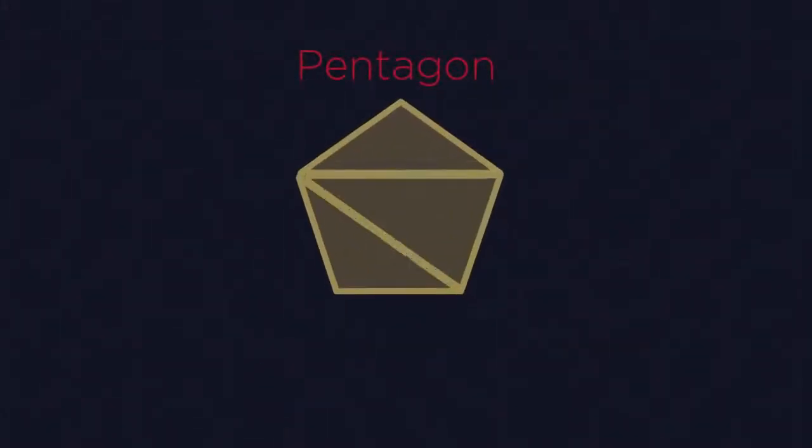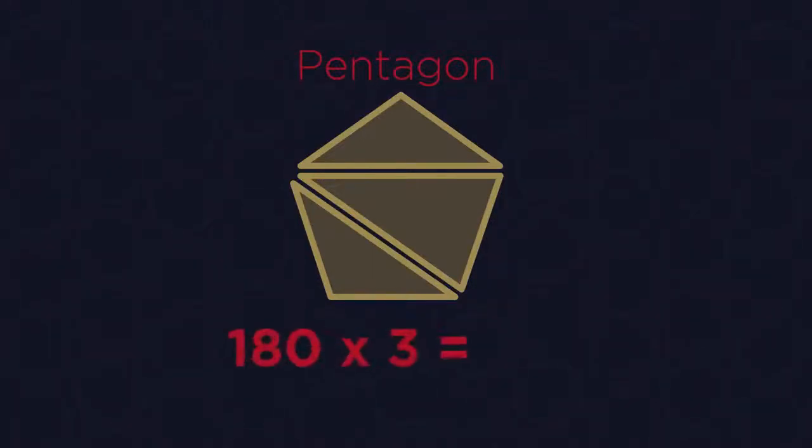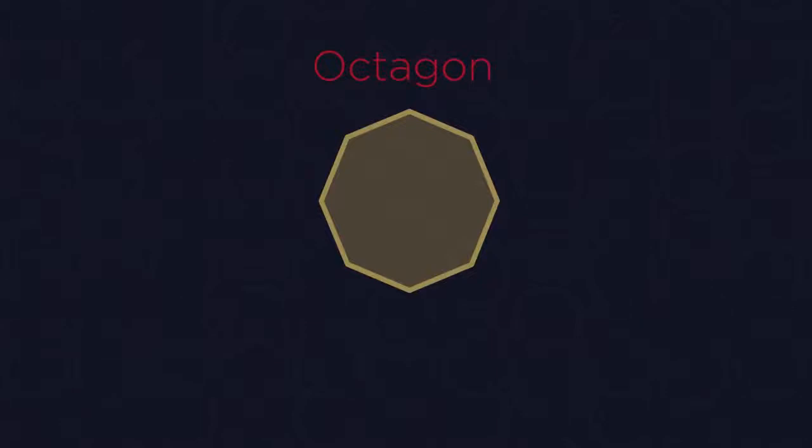All pentagons split into three triangles. So 3 times 180 means they have 540 degrees. What do you think the angles in an octagon add up to? Pause the video and work it out.